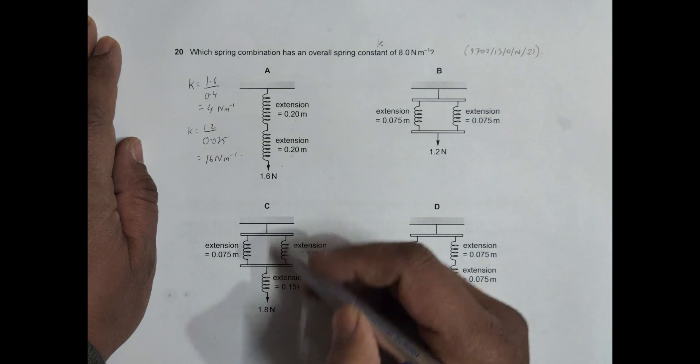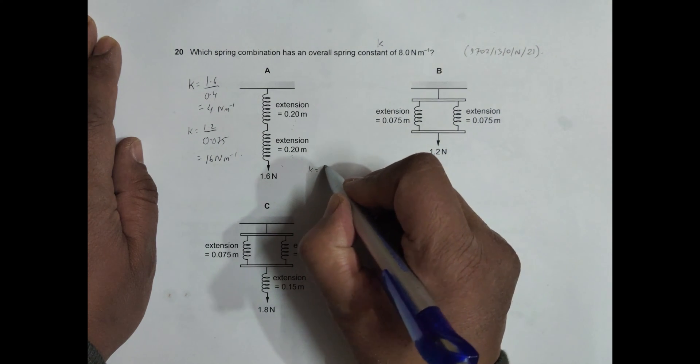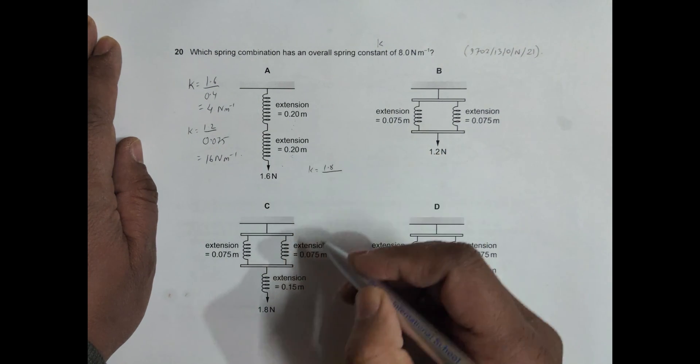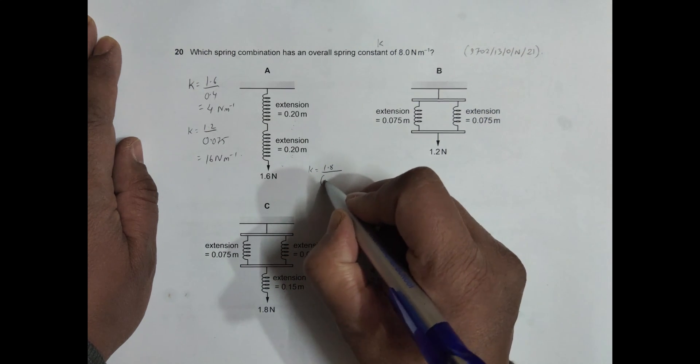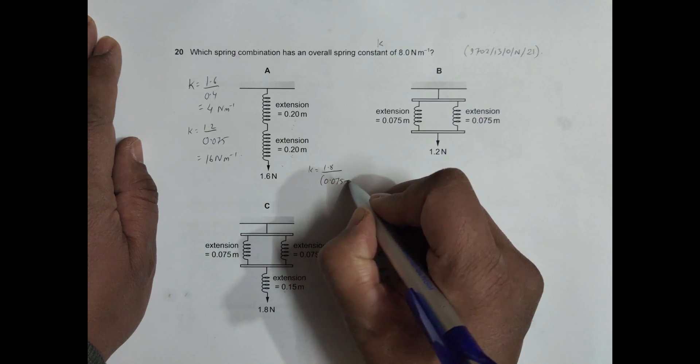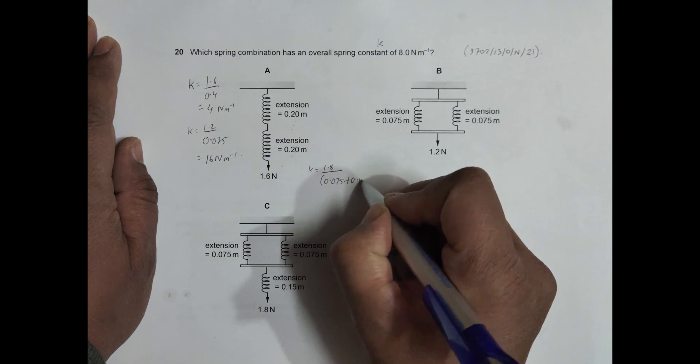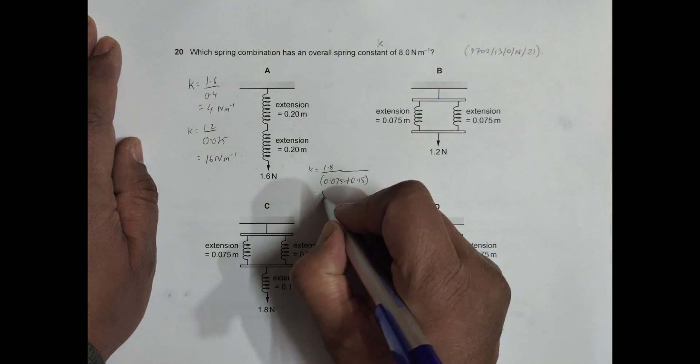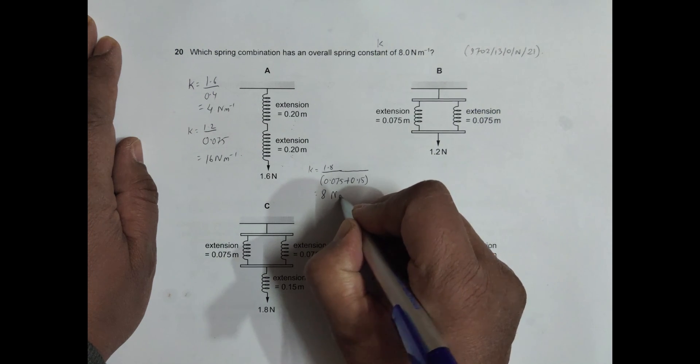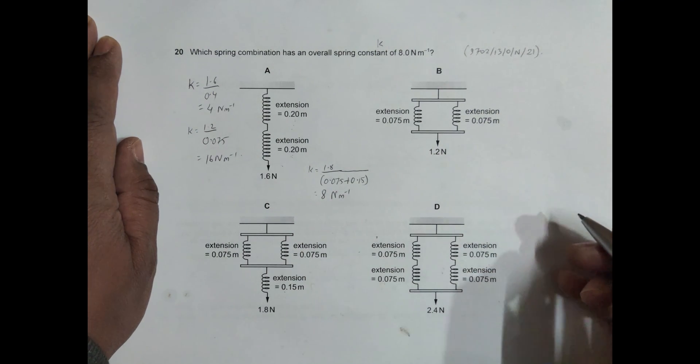Then let's come to number C. For number C, the force is 1.8, so K equals 1.8 divided by the extension. This is 0.075, so it comes down by 0.075, and this plus this is 0.15. So it is 1.8 divided by bracket 0.075 plus 0.15, which equals 8, it is 8 Newton per meter, which is the correct choice.